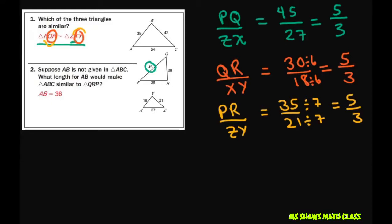This one, it says suppose 38 is not given. So suppose that 38 is not here. What length would AB have to be for ABC to be similar to angle QRP? So we want them to be the same proportion. So I'm going to do 54 to 27, should equal x to 18.